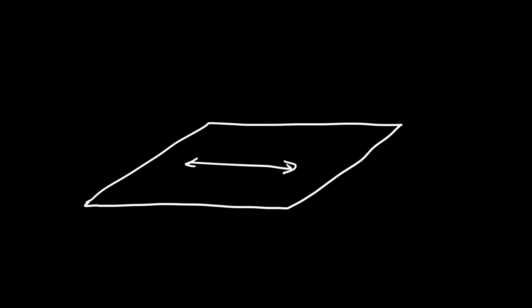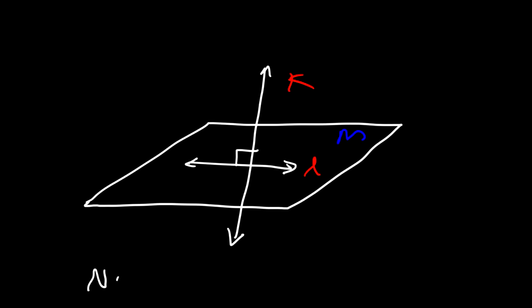You can also have non-coplanar lines. For example, let's say this is line L, and we have a line perpendicular to it — let's call this line K. Line L lies on plane M, but line K does not. So these are known as non-coplanar lines.